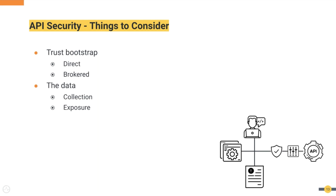The other aspect to take into consideration is what data we are dealing with. We should clearly identify what data to collect and minimize the data collection as much as possible. The more data you have, the larger the impact will be in the event of a breach. The same rule applies to the data exposed through these APIs — it should be limited to the bare minimum information required for the functionality of the application.